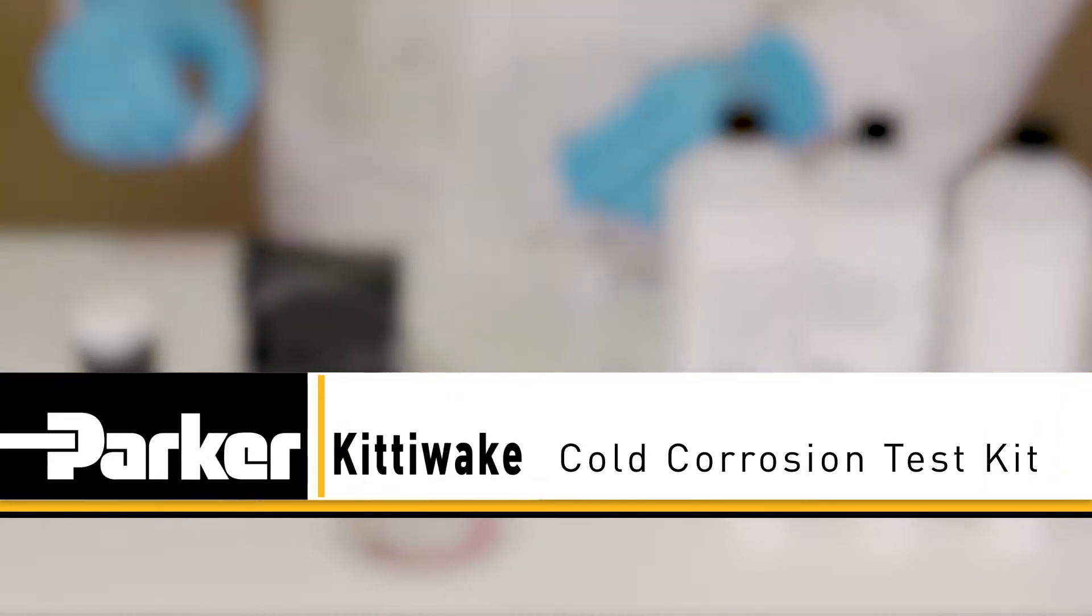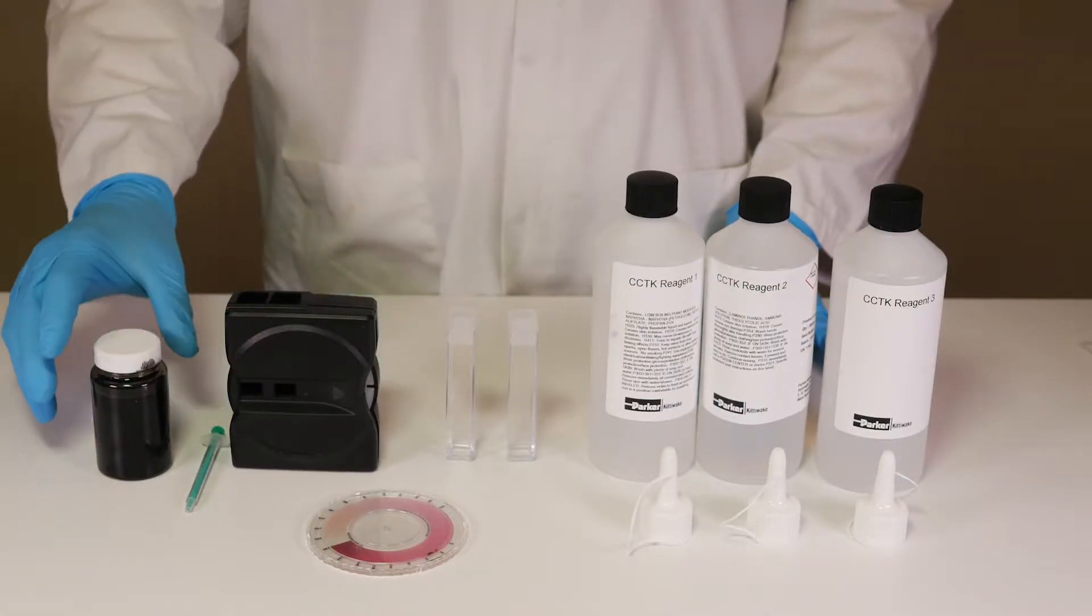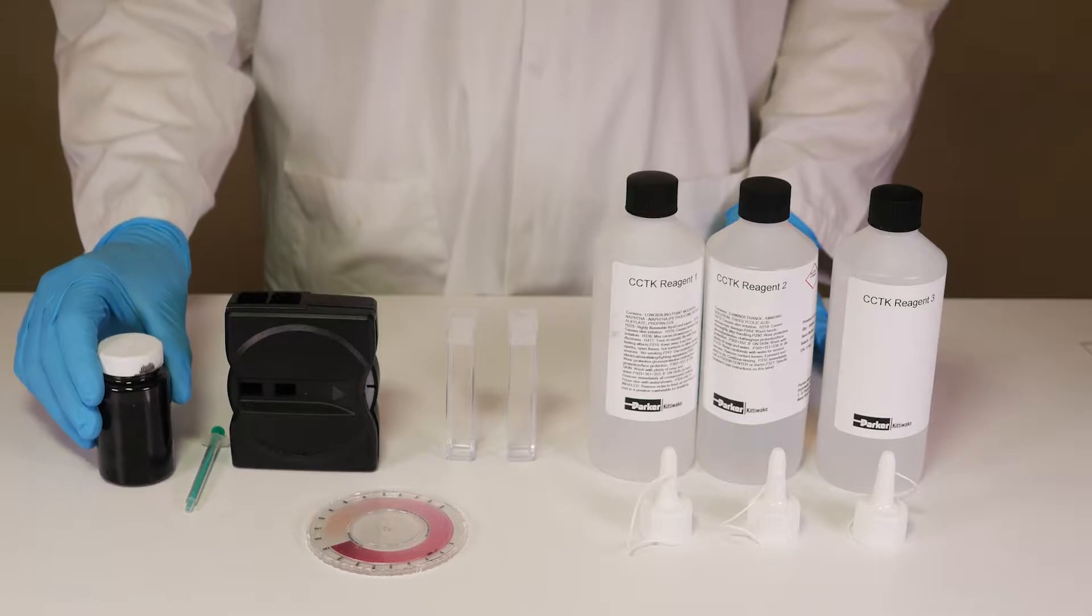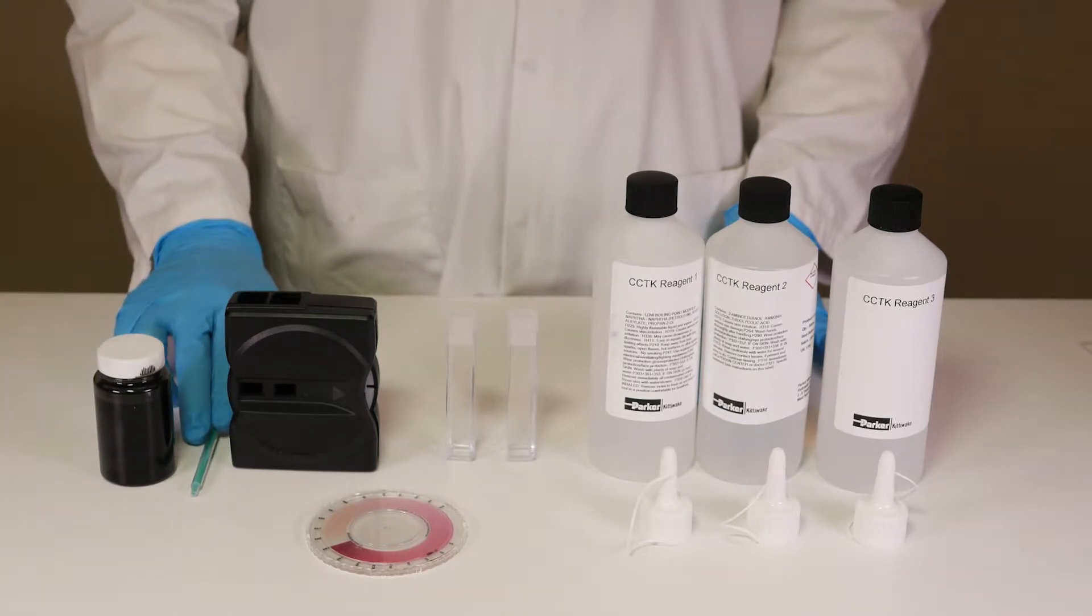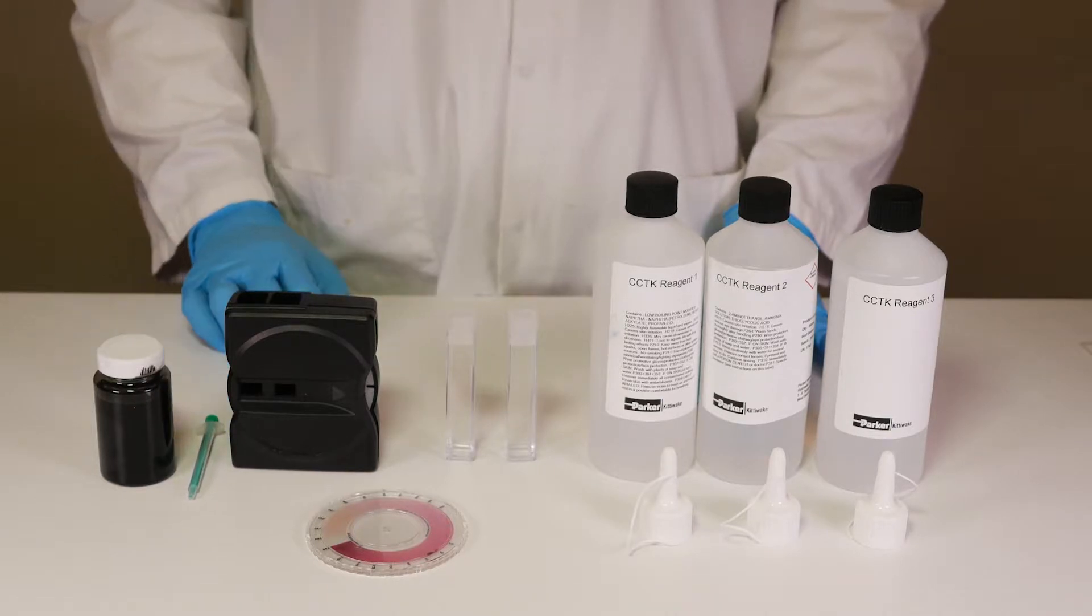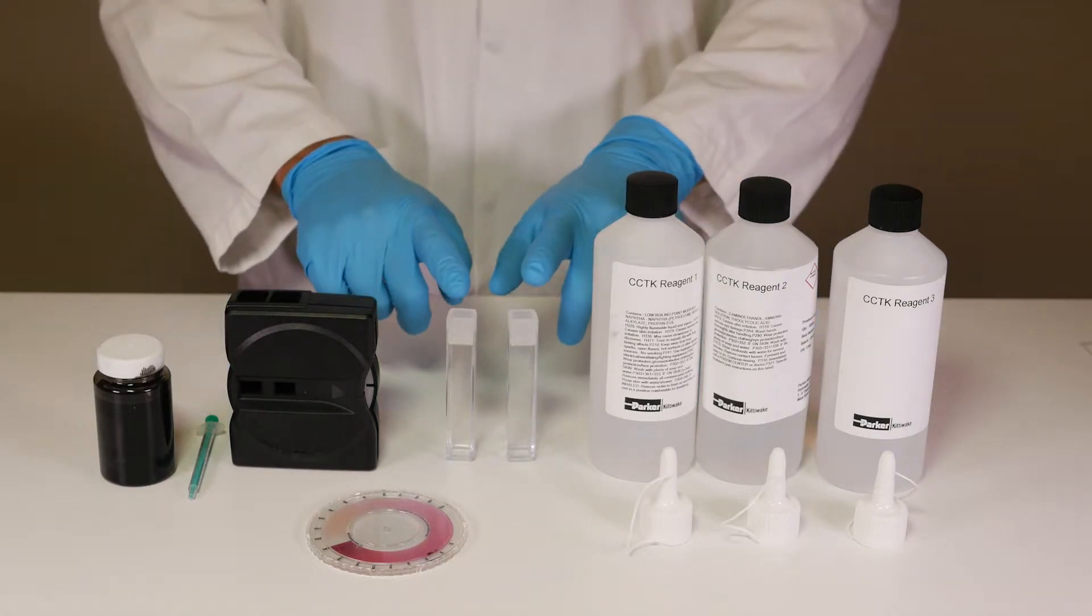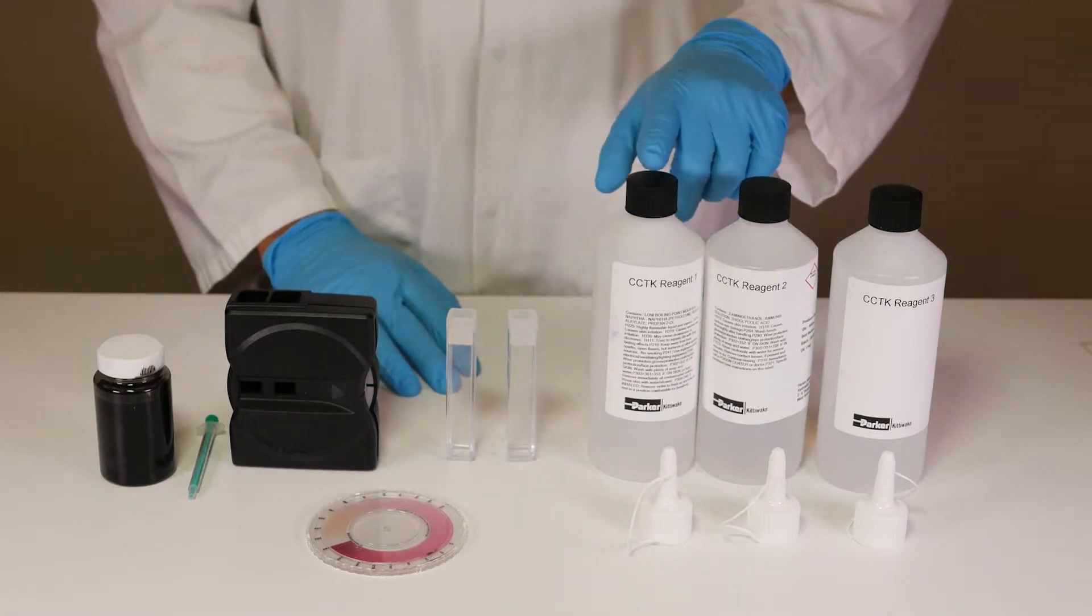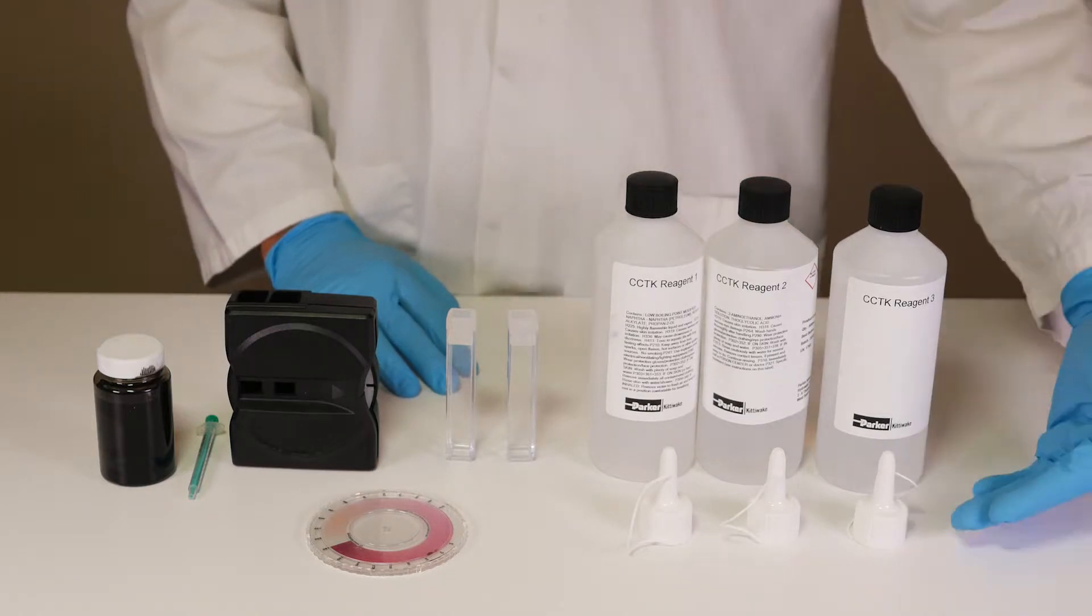To perform a Parker Kittiway cold corrosion test you will require the following: a sample of your cylinder scraped down oil, a one milliliter syringe, a comparator and colour wheel, two cuvettes, and reagents one, two and three with a pouring lid for each.